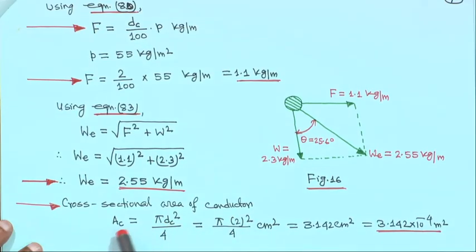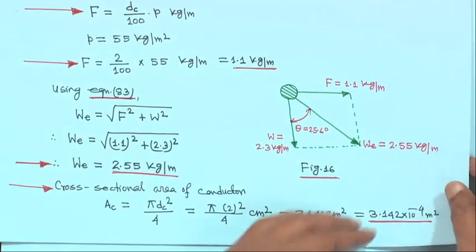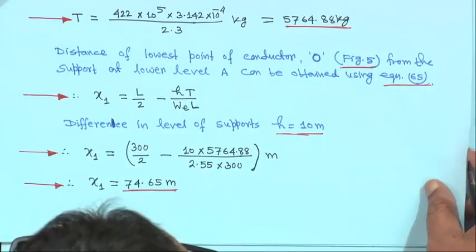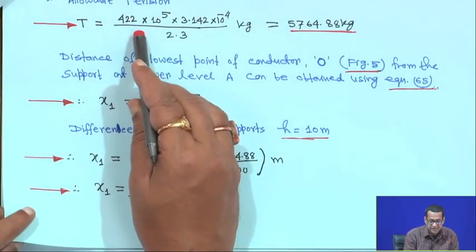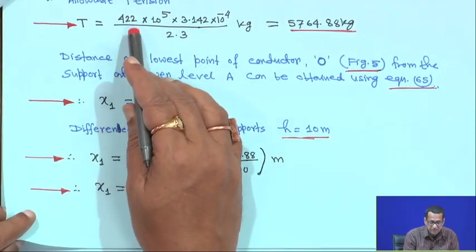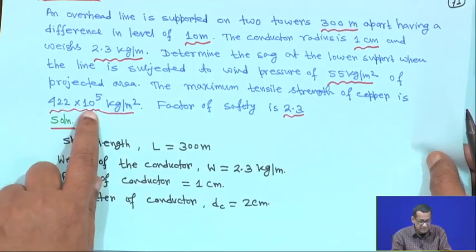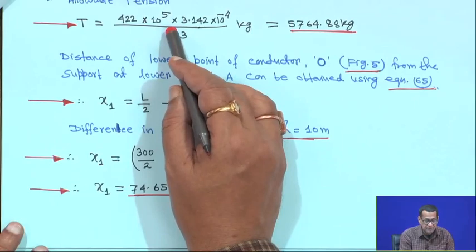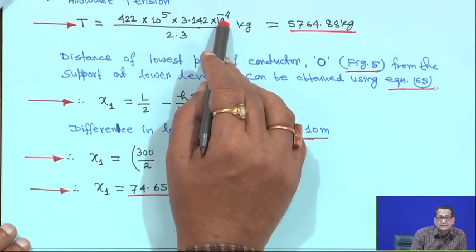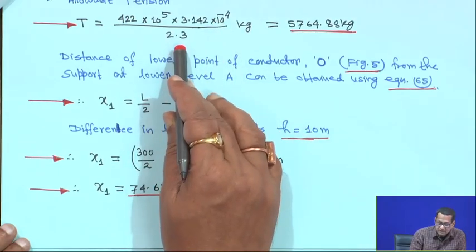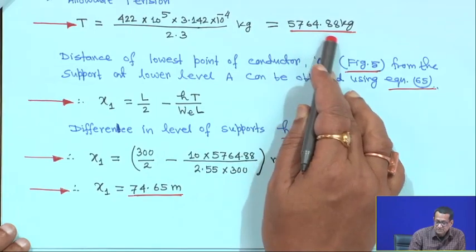Cross section area of the conductor AC is pi·DC squared by 4, that is pi into 2 squared upon 4, giving 3.142 centimeter squared, converted to 3.142 into 10 to the power minus 4 meter squared. Allowable tension: factor of safety is 2.3, and maximum tensile strength is 422 into 10 to the power 5 kg per meter square. So T equals 422 into 10 to the power 5 into 3.142 into 10 to the power minus 4 divided by 2.3, which is 5764.88 kg.